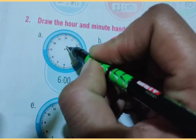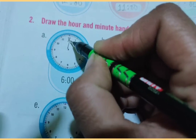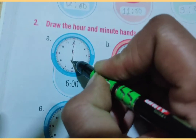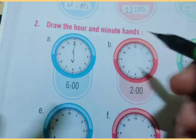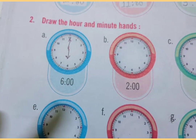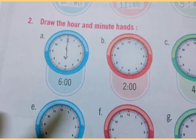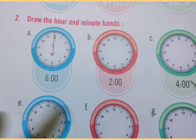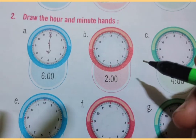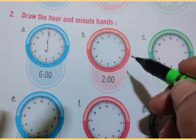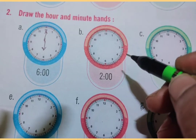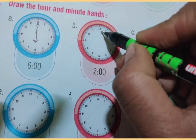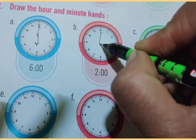You can draw the minute hand at 12 and the hour hand at 6. So this watch shows six o'clock. Now the second part is given: two o'clock. Now we can draw the minute hand at 12.